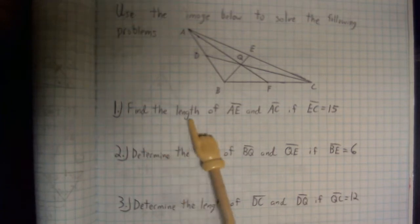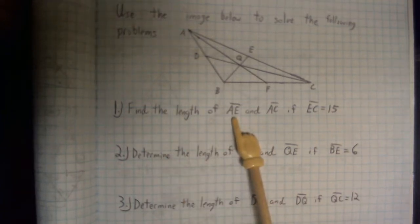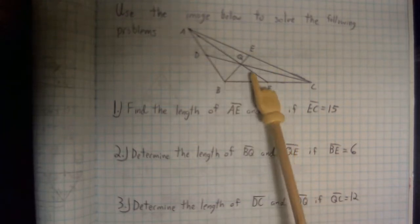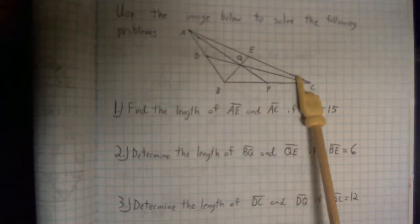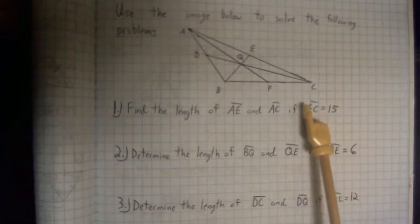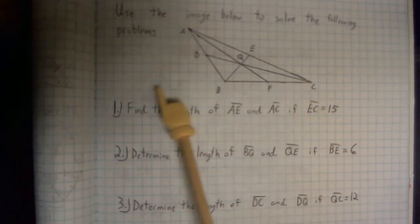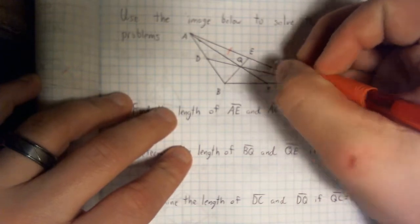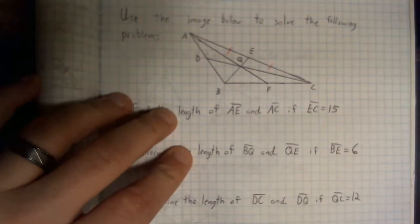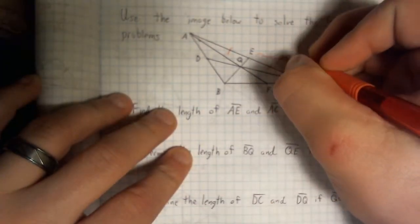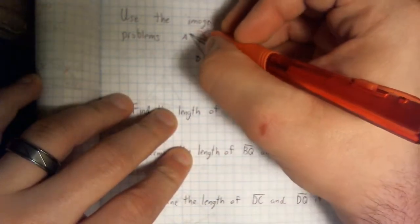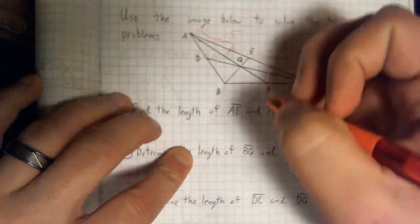First problem says, find the length of AE, AE, right here, one of our sides, and AC, which is the entire length, if EC equals 15. EC. Well, these are all medians. That means that I can mark these two pieces congruent to each other. And if EC equals 15, and this is congruent to AE, this must also equal 15.